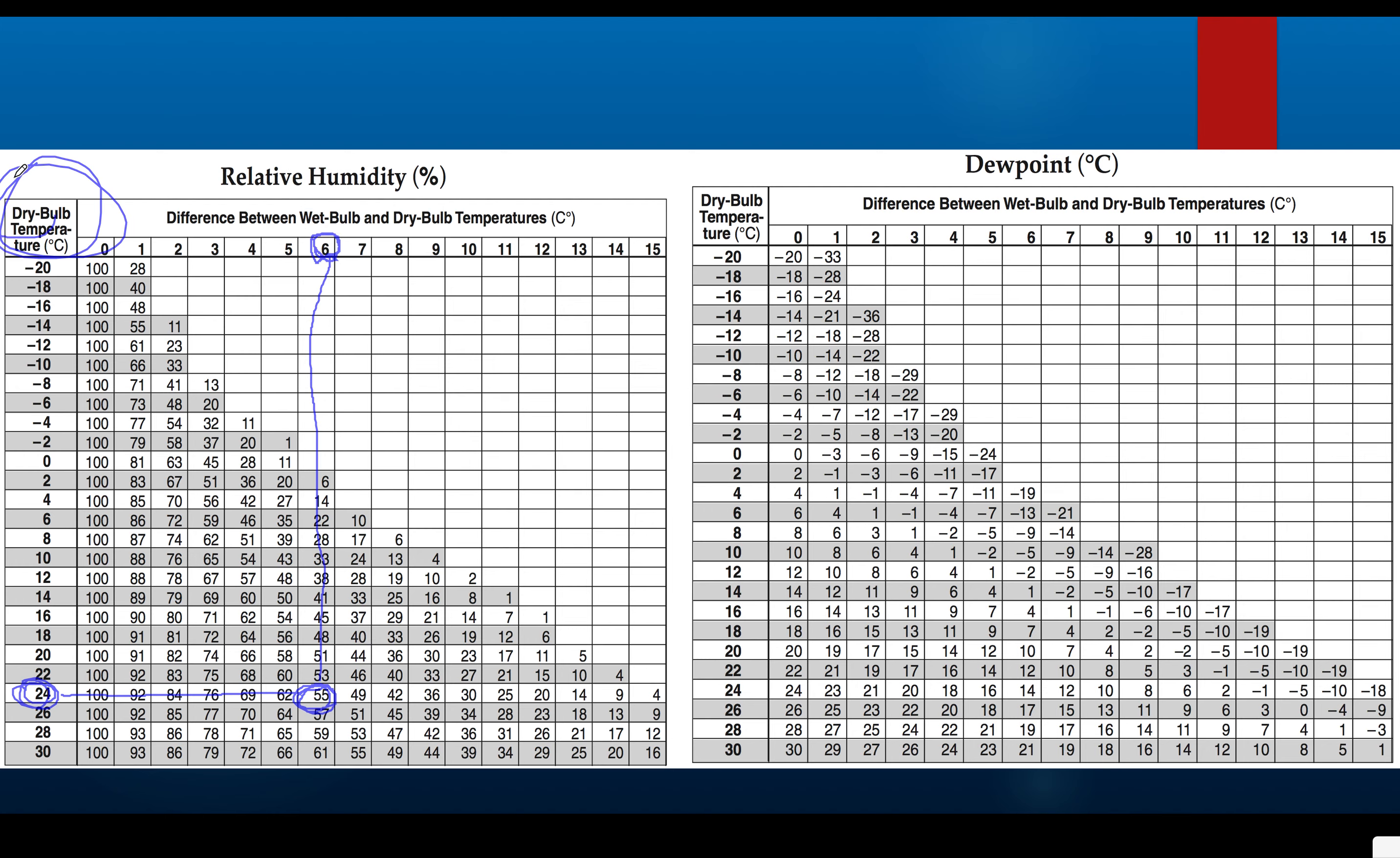Now that I have my dry bulb temperature and the difference, which is also called the depression, I can answer this next question. The question said, what's the dew point temperature, or what is the temperature in which we would reach 100% humidity if the air all of a sudden dropped from 24 degrees to this temperature? So, we said the difference was 6, and the air temp was 24. Remember, that's also called the dry bulb. We follow it across. We figure out where they meet. They meet at 14 degrees. So, if the air were to drop from 24 and directly change to 14 degrees, we would have condensation, cloud formation, high chance of dew forming, precipitation, cloud cover. So, again, the closer we get to that dew point, the greater the chance for rain, the higher the humidity. So, the dew point would be 14 degrees.